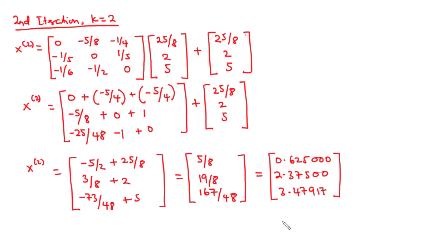These are the set of values obtained after the second iteration step, and they are the same as the values we obtained when solving this example using the normal Jacobi iteration method. That's it for today's video — thanks for watching and see you in the next video.